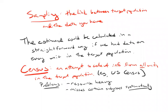A census is going to miss certain subgroups in a systematic way — people who are homeless, undocumented, or college students are harder to find than someone who's lived in the same home for 50 years. If you try to do a census, you're actually worse off than if you used all your resources to collect a representative subset of the data. What we'll be talking about is how to collect and analyze data that is purposefully a subset of the target population.